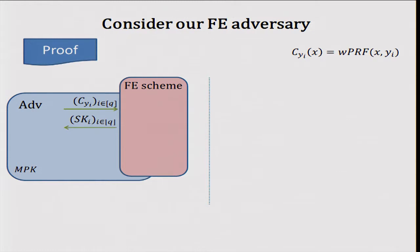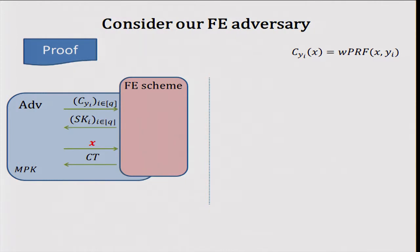Consider a particular functional encryption adversary. He defines the circuits as the weak PRF evaluated on X and input y_i. He chooses a bunch of inputs at random, defines the circuits appropriately, submits them to the functional encryption scheme, and gets the corresponding secret keys. Later on, the adversary chooses a key X for the weak PRF also at random, submits it to the functional encryption scheme, gets a corresponding ciphertext, and outputs the ciphertext and all the secret keys together with the appropriate inputs.